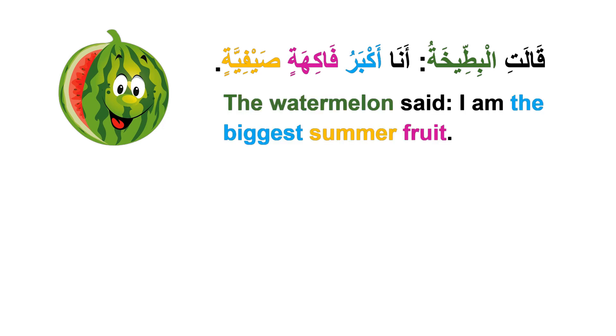The watermelon said: قالت البطيخة، أنا أكبر فاكهة صيفية — I am the biggest summer fruit. أنا أكبر means I am the biggest, فاكهة صيفية means summer fruit.